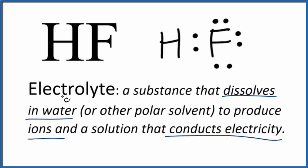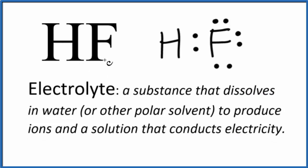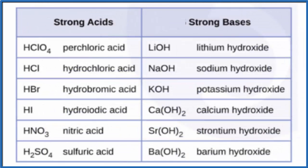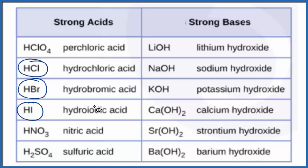When we put HF in water, we need to recognize that this is an acid — this is hydrofluoric acid — and it's a weak acid. The way we know that is by memorizing a list of common strong acids. You can see from our list that HF doesn't show up. We have HCl, HBr, and HI, but HF is not on our list of common strong acids. That means it's going to be a weak acid.